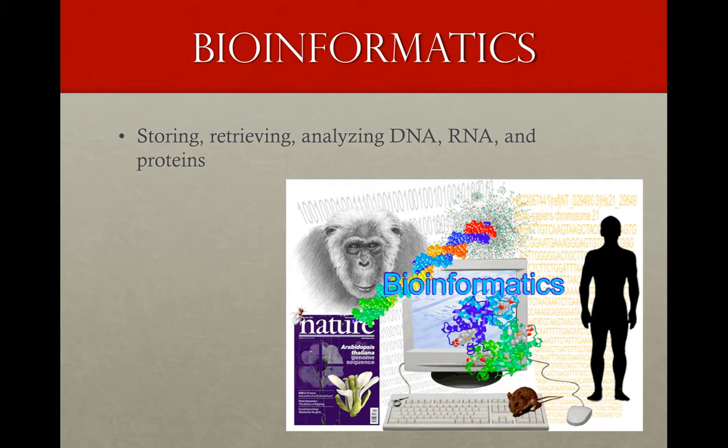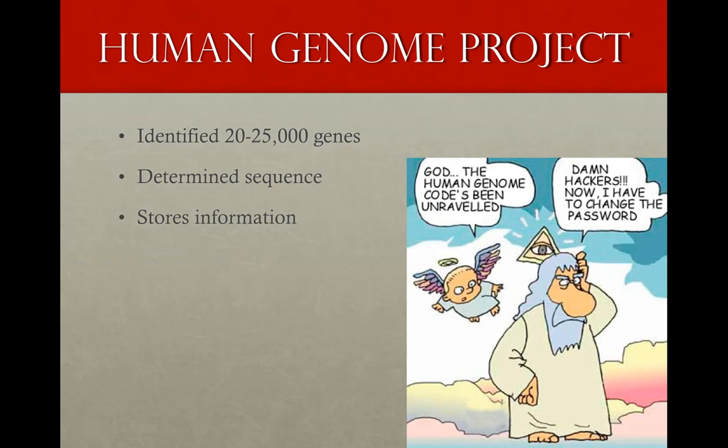Completed in the year 2003, the Human Genome Project was a 13-year project that identified 20 to 25,000 human genes, determined the sequence of 3 billion base pairs, and stored the information in databases.